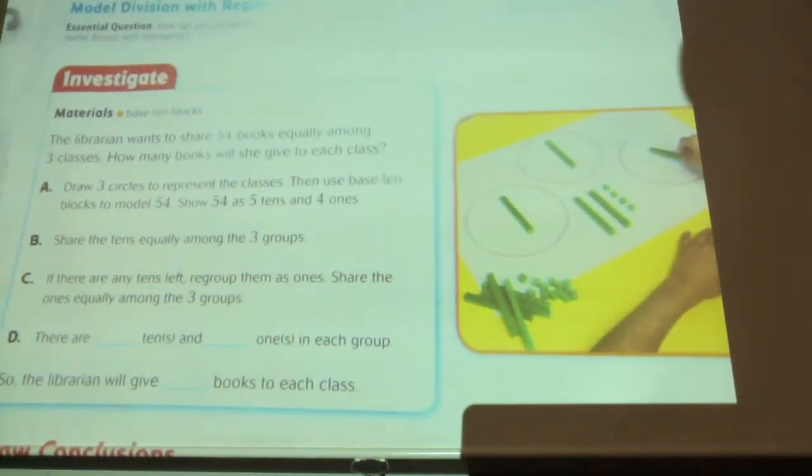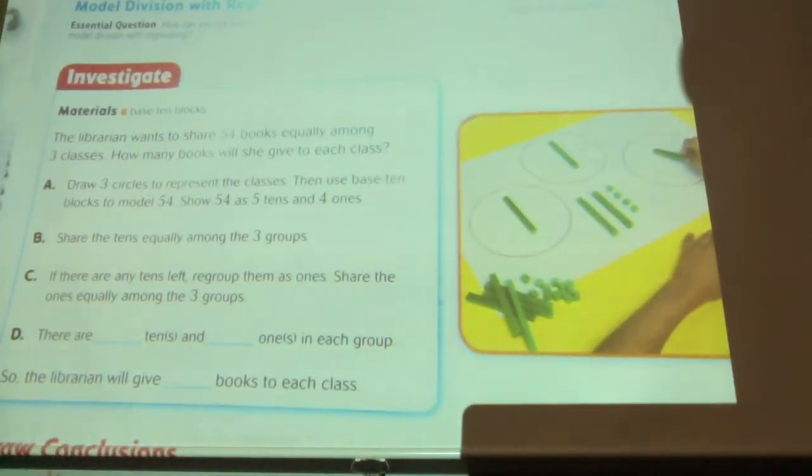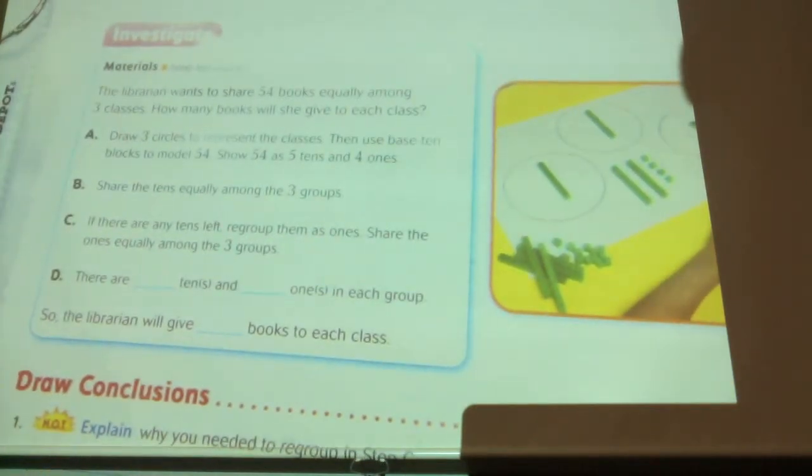The librarian wants to share 54 books equally among three classes. How many books will she give to each class? So the first thing we're going to do is draw three circles. You're going to use this back side and draw three circles. Make them big.